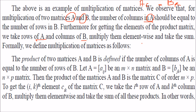The product of two matrices A and B is defined only when the number of columns of A equals the number of rows of B; otherwise we cannot proceed. If A is an M×N matrix and B is an N×P matrix, the product matrix C will be of order M×P.